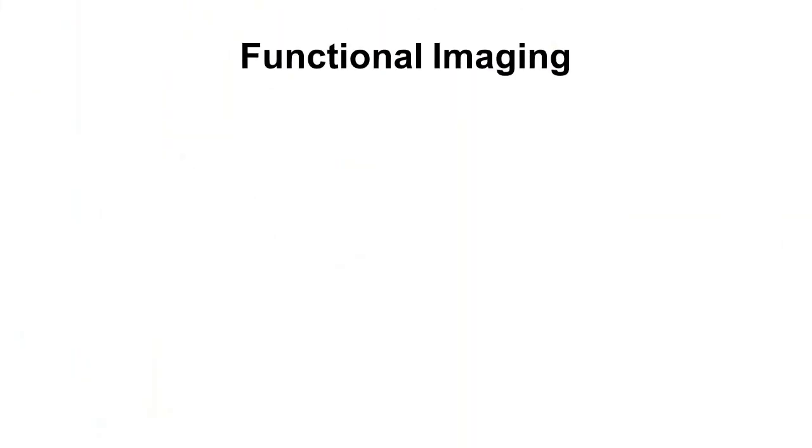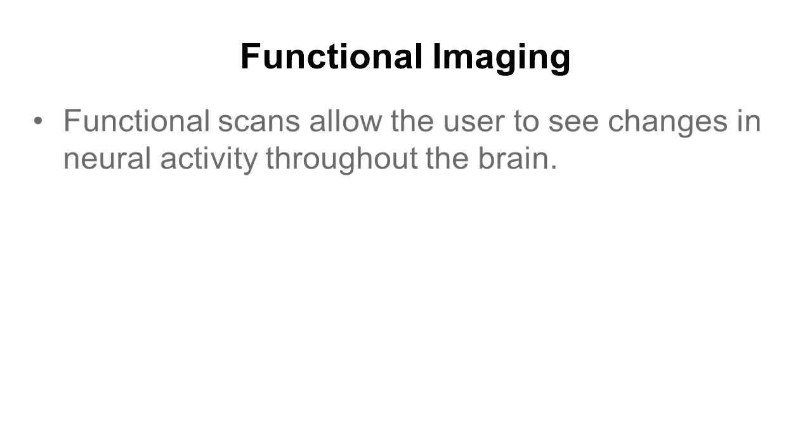These structural scans are great for looking at the structure of the brain, but they don't tell us anything about what the brain is actually doing. In the previous video I talked about how different parts of the brain are involved in vision, hearing, and so on — and we were able to figure out a lot of that using what's called functional imaging techniques. A functional brain scan allows you to see which parts of the brain are more active at any particular time.